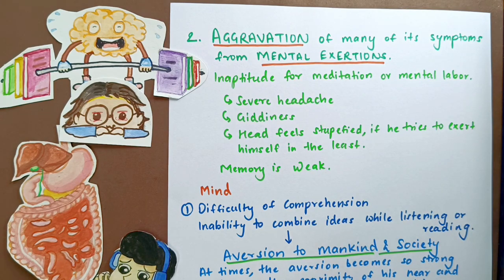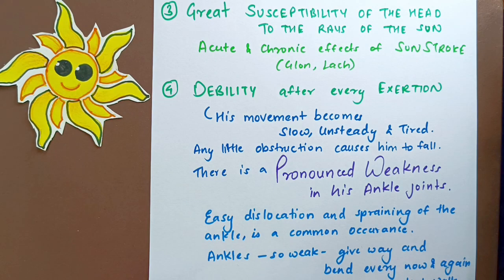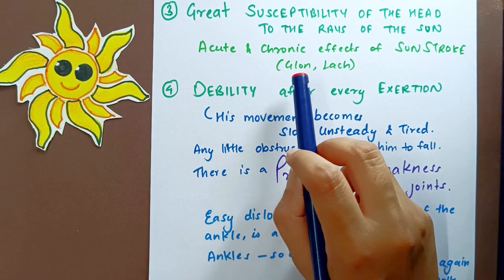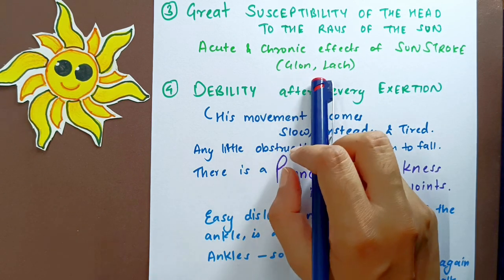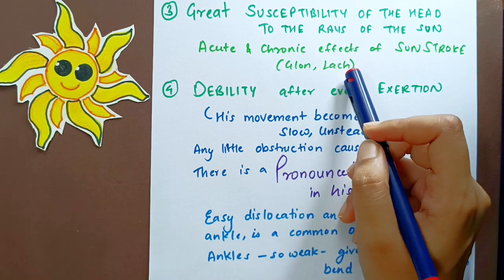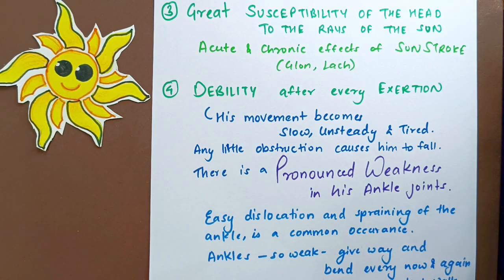The third important characteristic is great susceptibility of the head to the rays of the sun. There are acute and chronic effects of sunstroke. Comparative remedies here are Glonoine and Lachesis, which also have headaches due to sun. Sun especially aggravates the head.